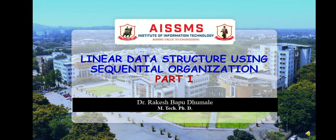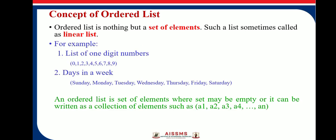In this video we will discuss linear data structure using sequential organization. We will consider the concept of an ordered list. An ordered list is a set of elements — sometimes called a linear list. Two examples are: a list of one-digit numbers (0 to 9) and days in a week (Sunday through Saturday). An ordered list may be empty or written as a collection of elements a1, a2, up to an.